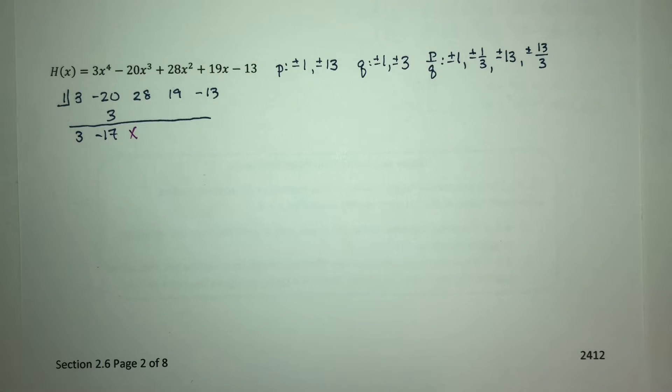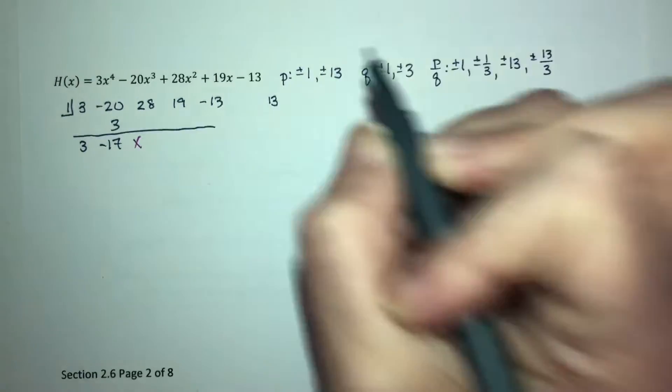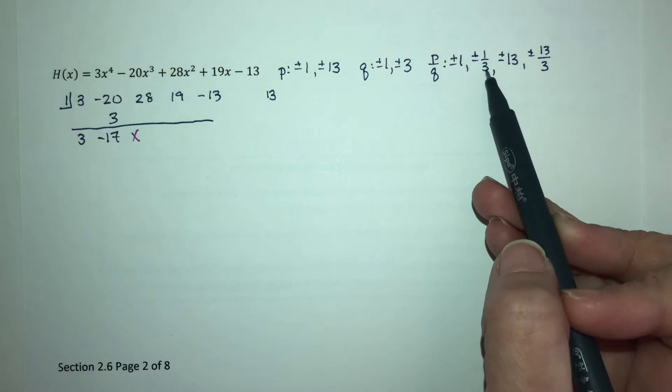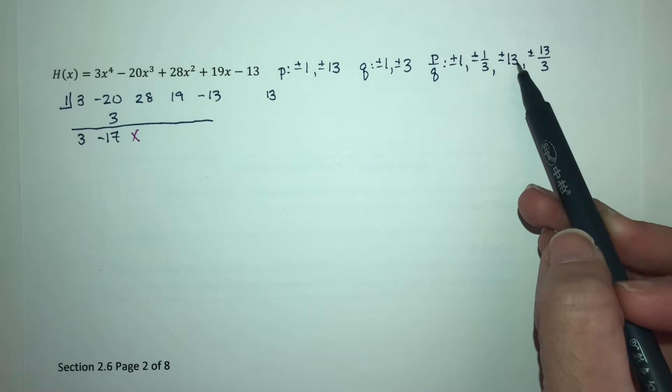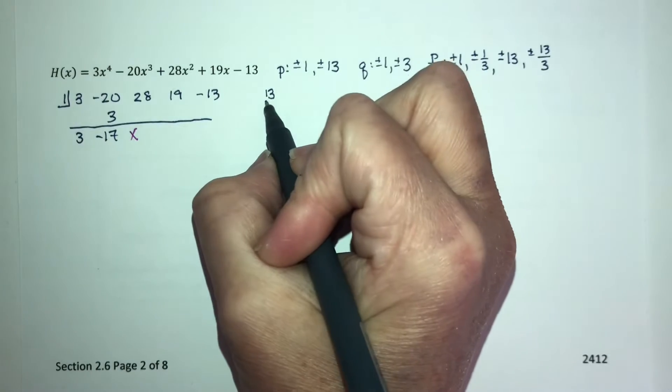Let's check 13. Since this is not an upper bound, 1 third is also not. So I'm now either 13 or 13 thirds. You're actually going to have to test both of them anyway. So let's do 13 thirds.